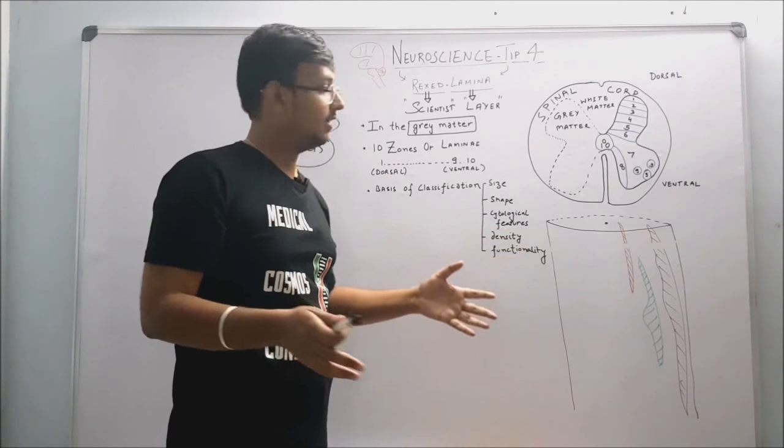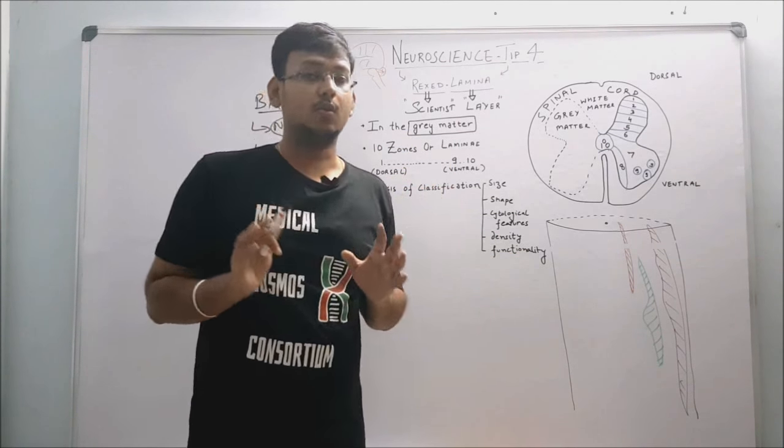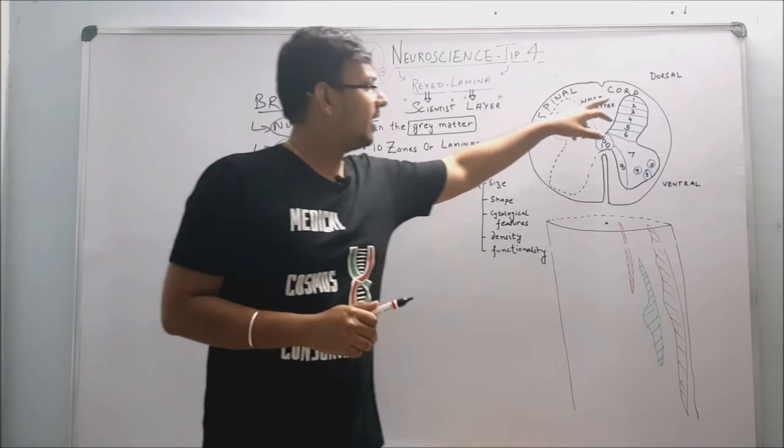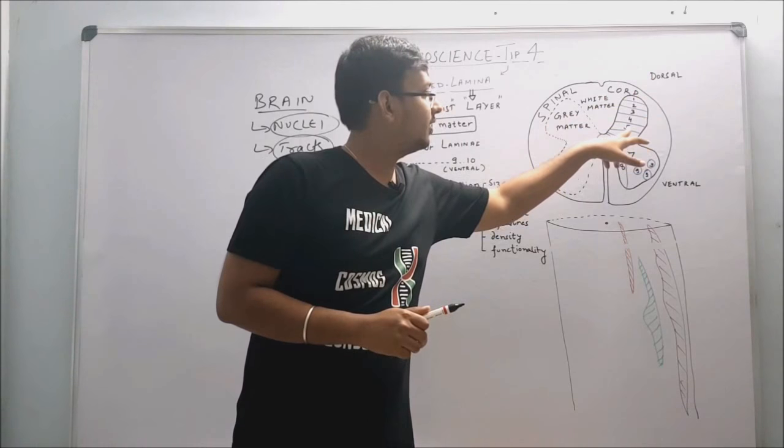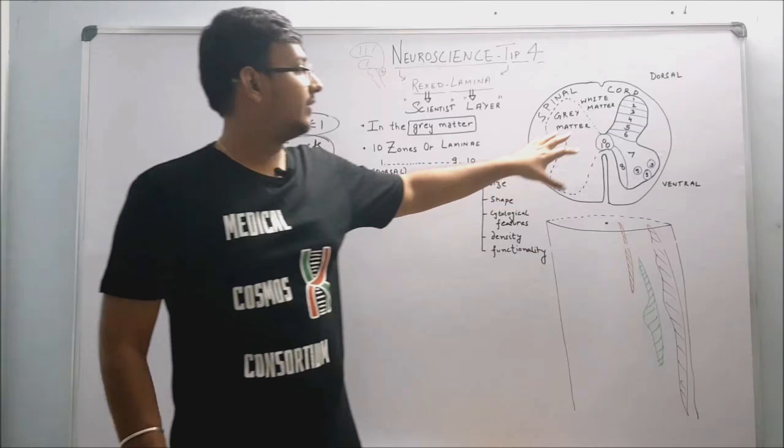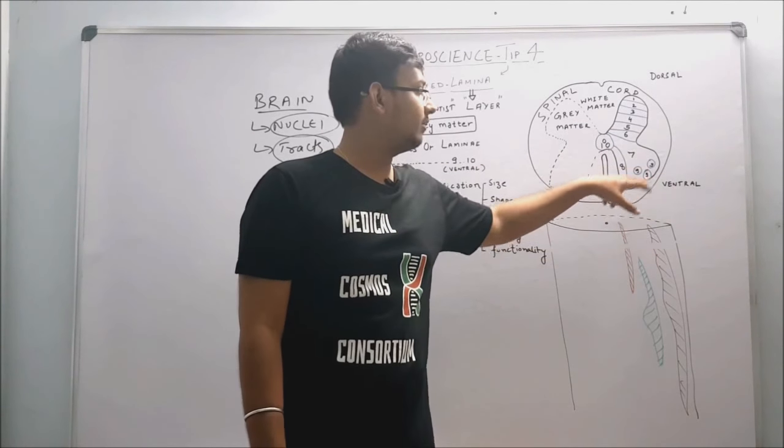Basically it lies in gray matter - very basic - and it is divided into 10 zones or laminae. So one to five, you can see, are in dorsal position - one to five dorsal position.